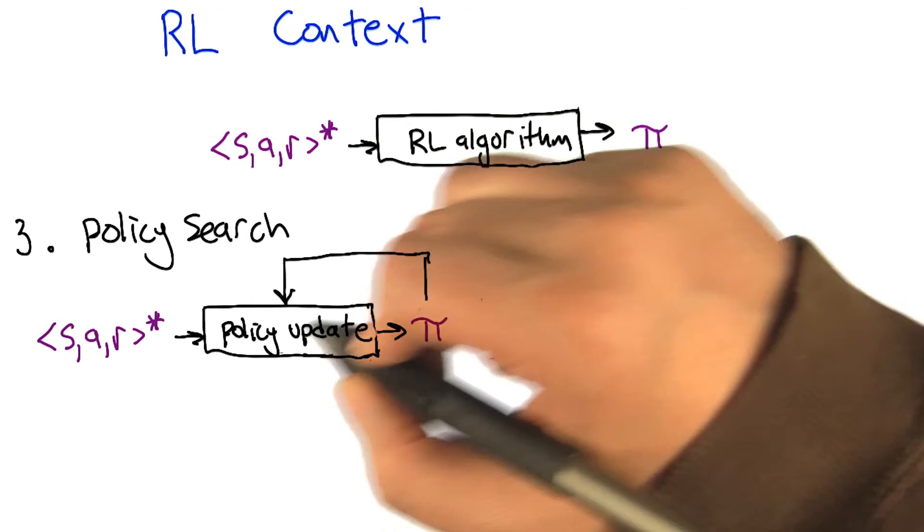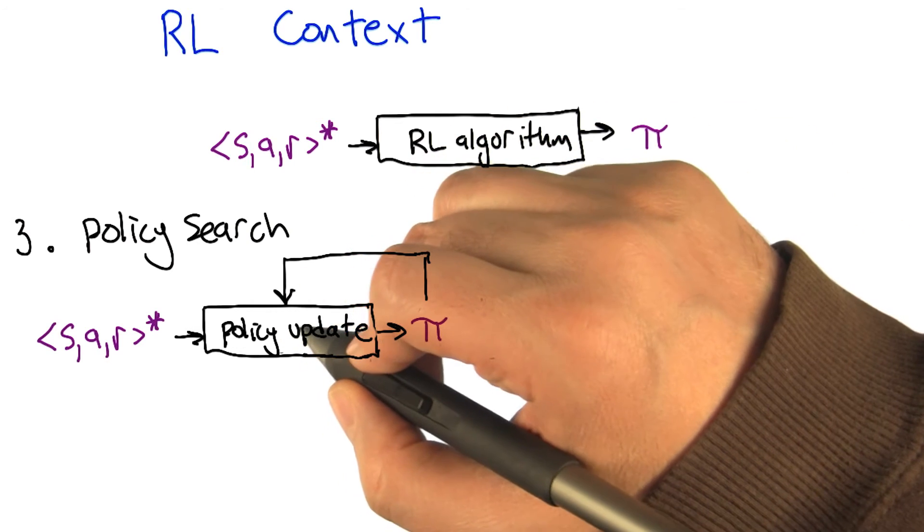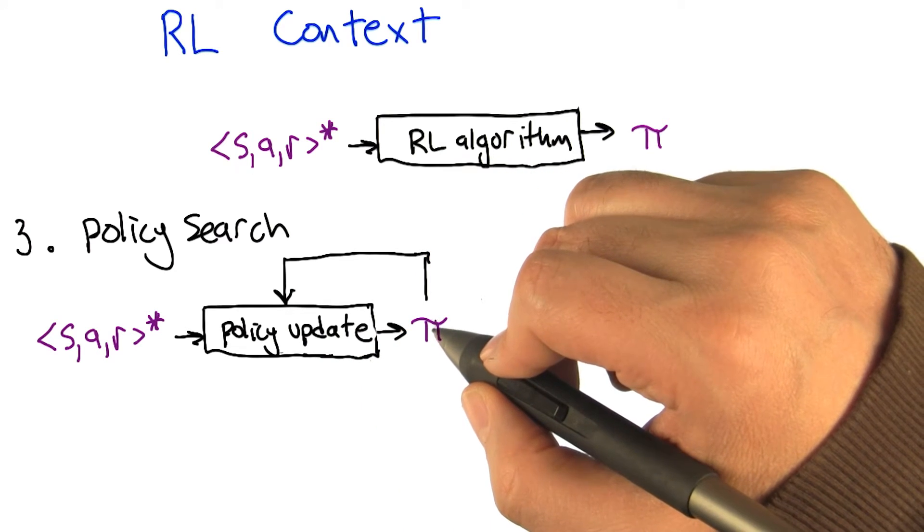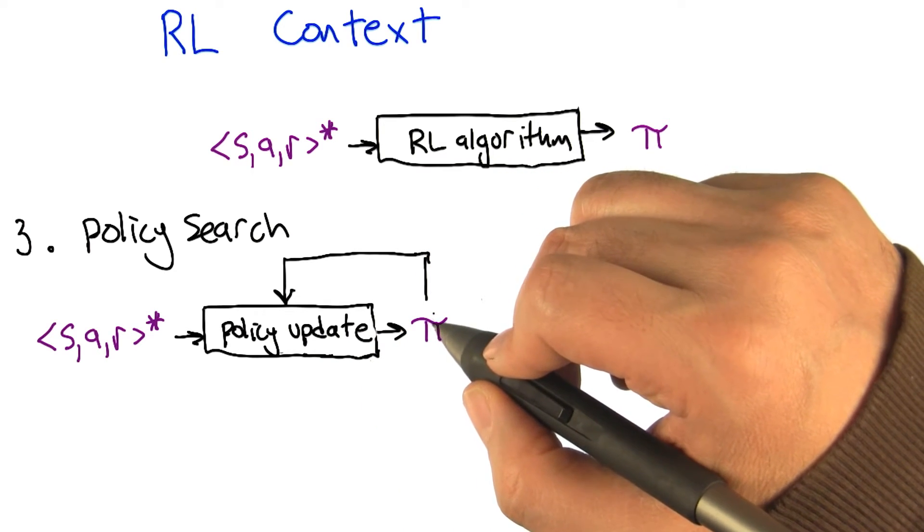So in some sense, this is much more direct, but the learning problem is very difficult because the kind of feedback that you're getting about the policy isn't very useful for directly modifying the policy.